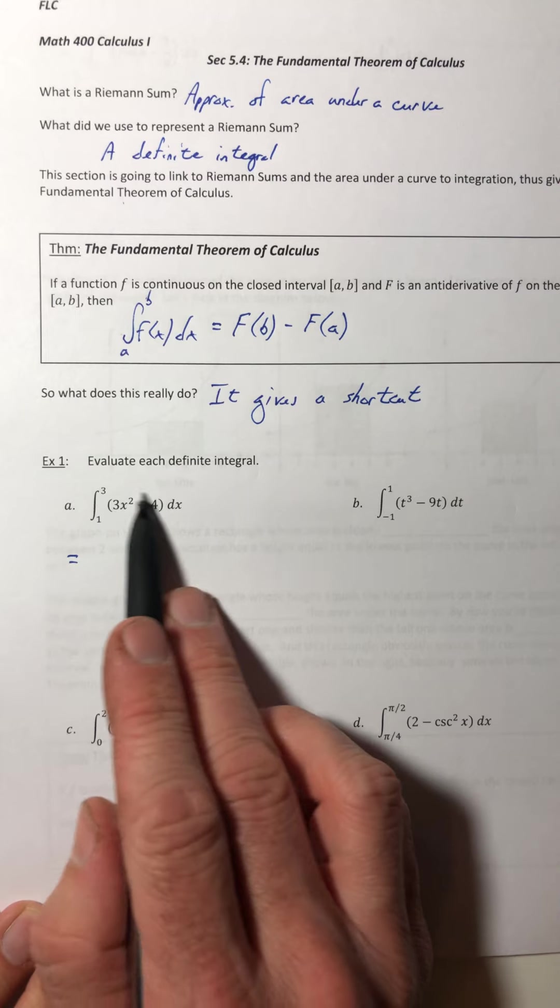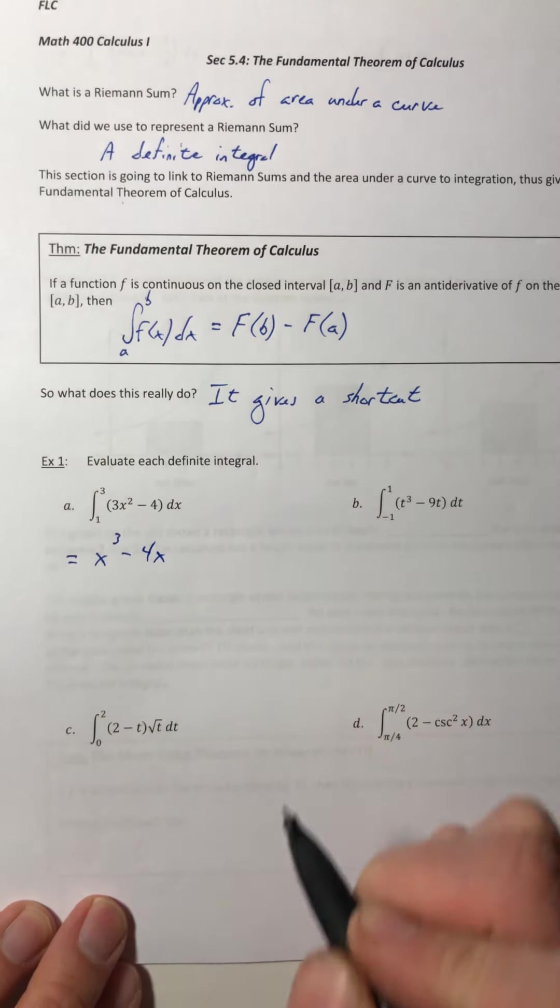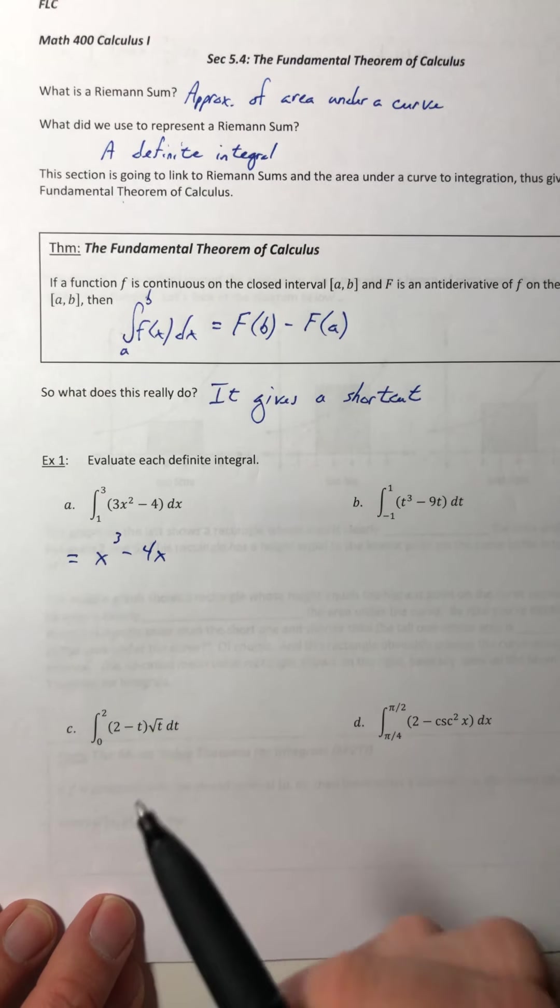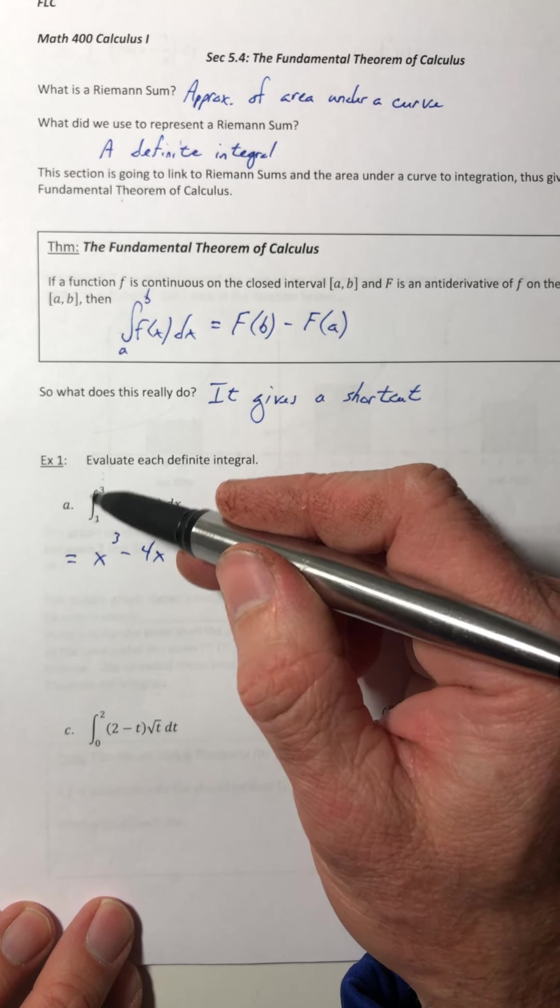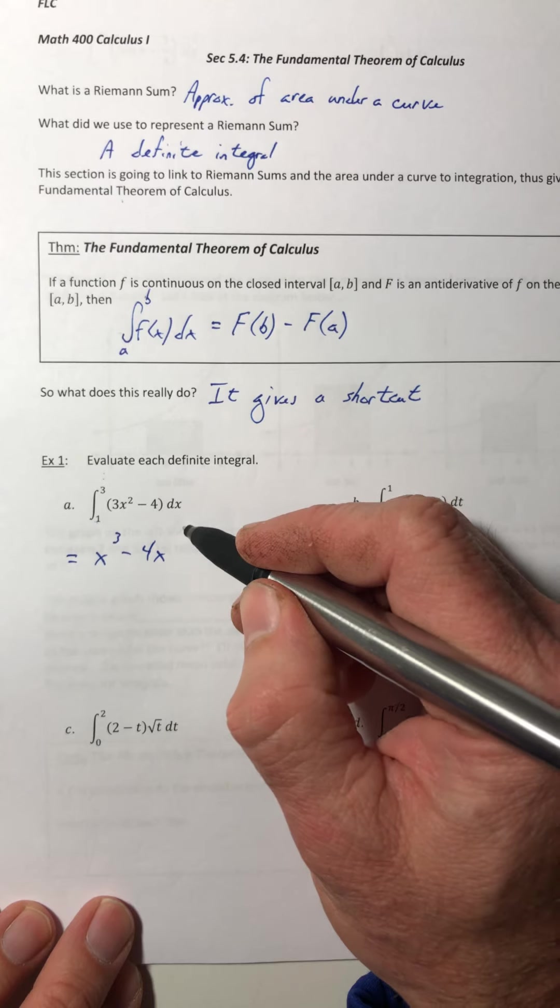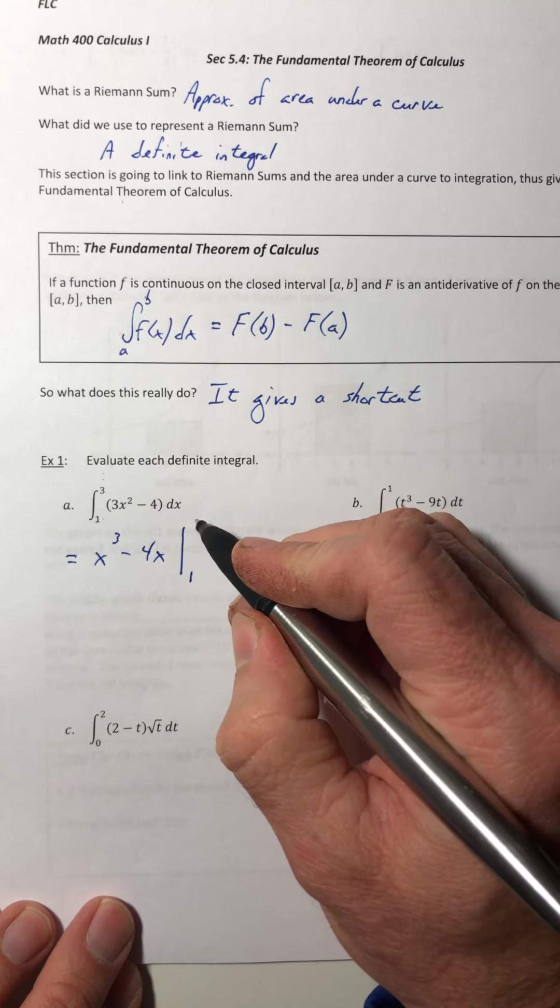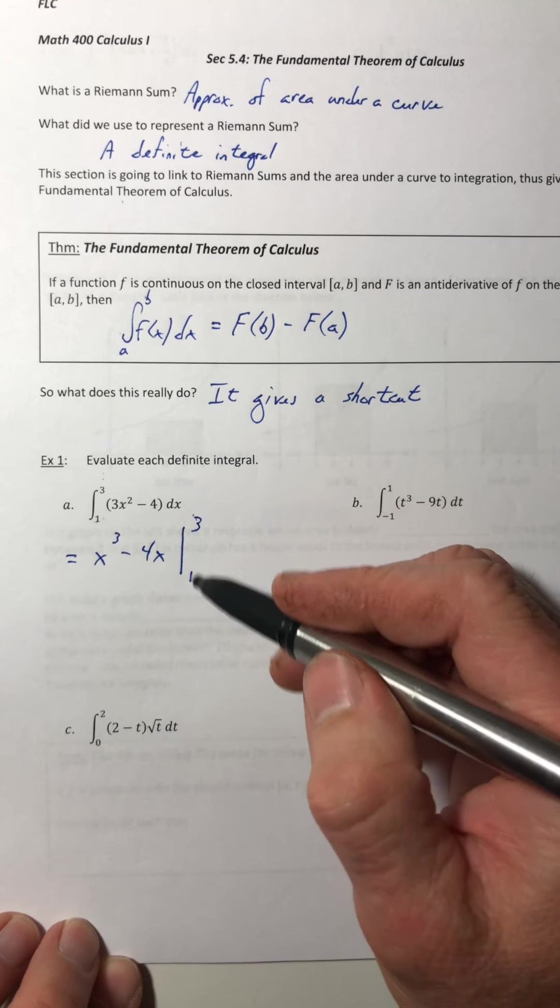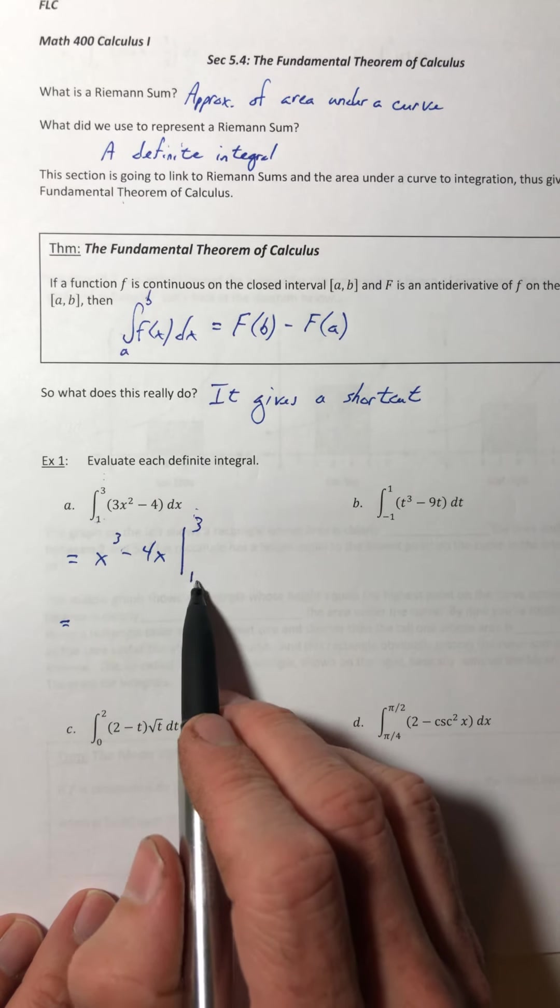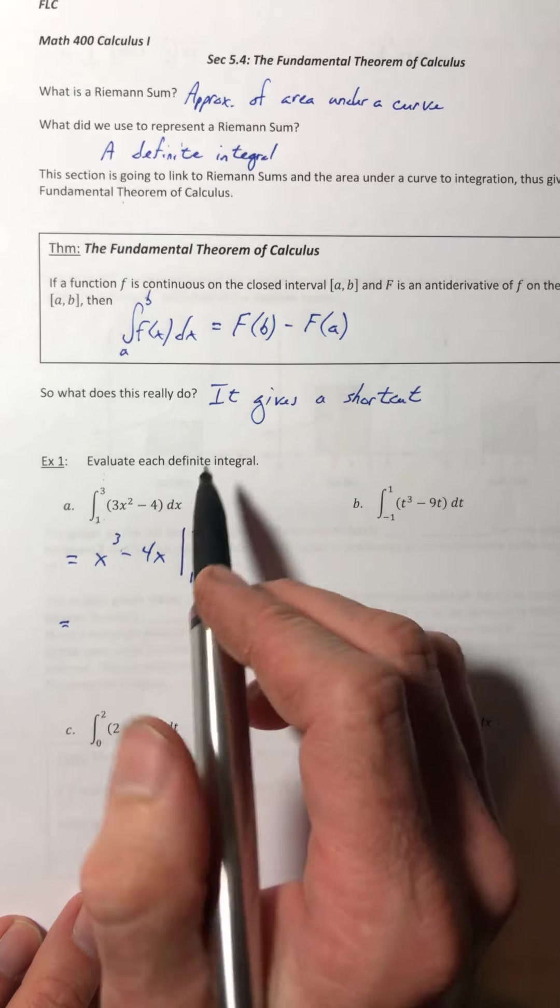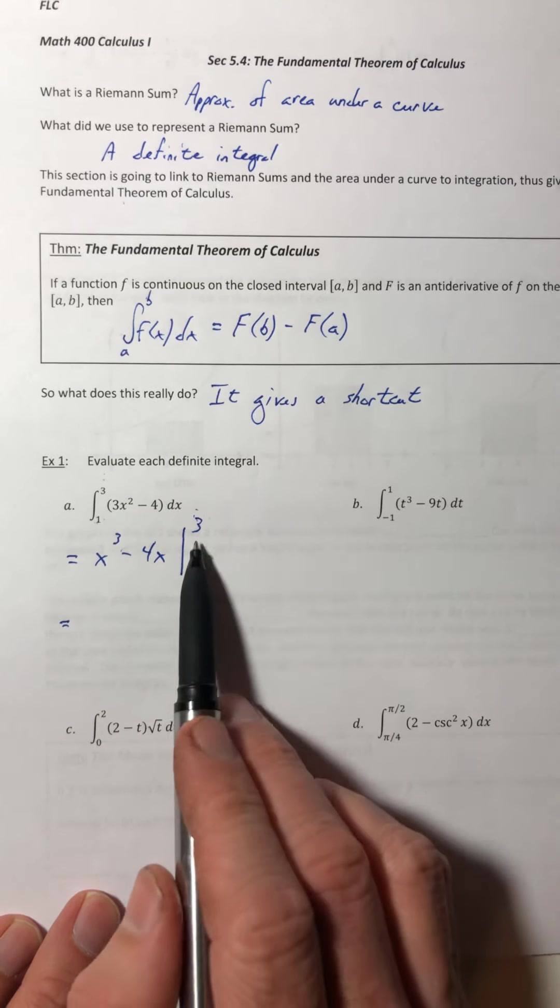So all we need to do is find the antiderivative of this function. So we're going to integrate it. So x³ minus 4x. And then the notation, because this is the definite integral, just to help us remember that we have to plug these in, you're going to put a bar over on the far right, and you put your lower and upper bound in there as well. So we're going to integrate, put the bar with the bounds, and then finish off the rest of the theorem, F(b) minus F(a).